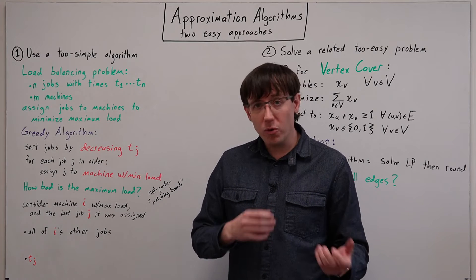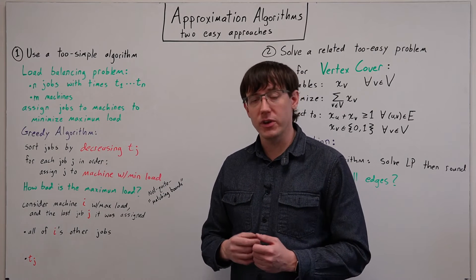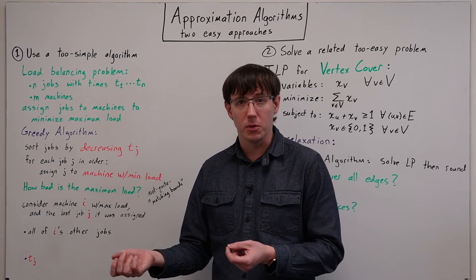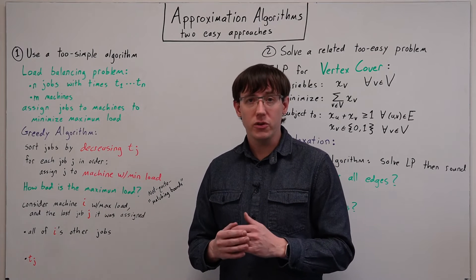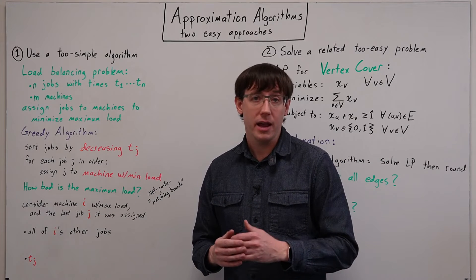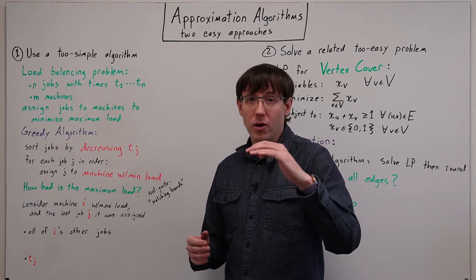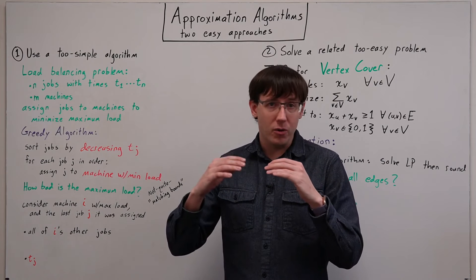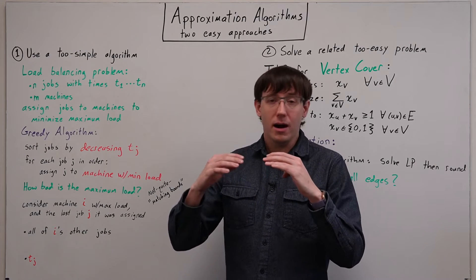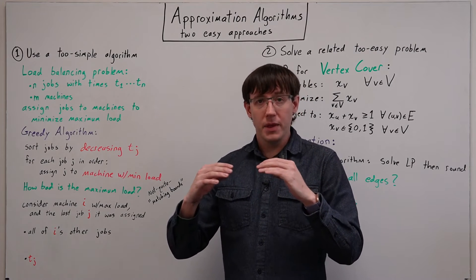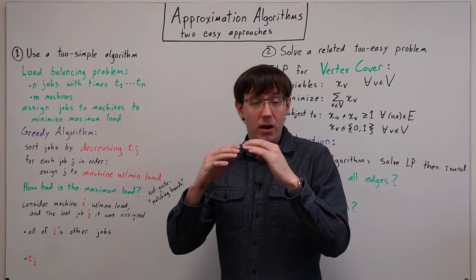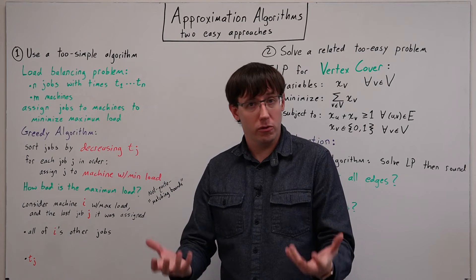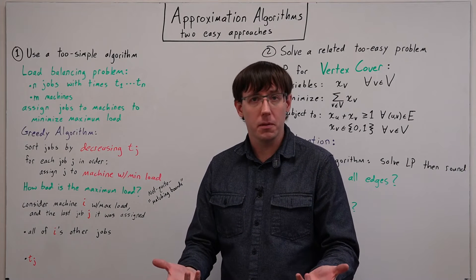Where for some greedy algorithms, a way to prove that they are optimal is to give a lower bound on the optimal solution and an upper bound on our solution, and if those bounds are the same, we know our algorithm is optimal.